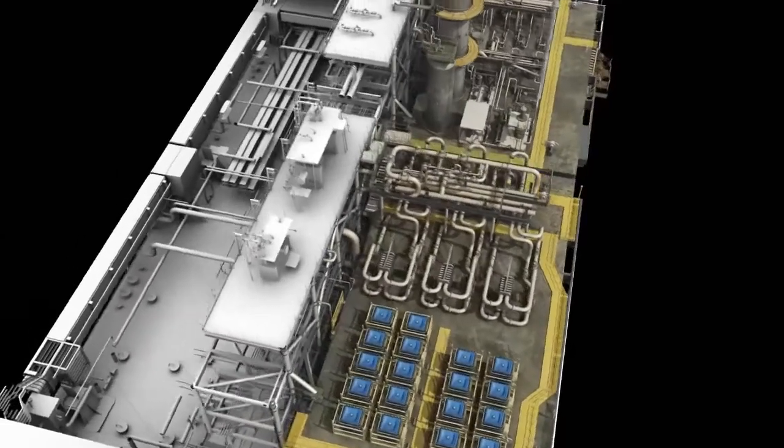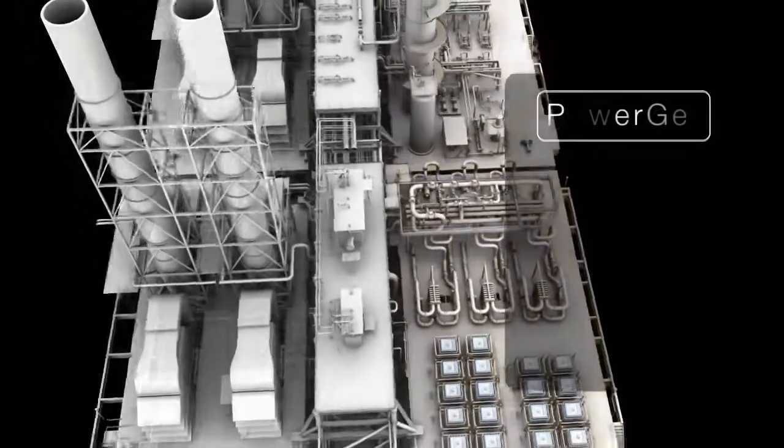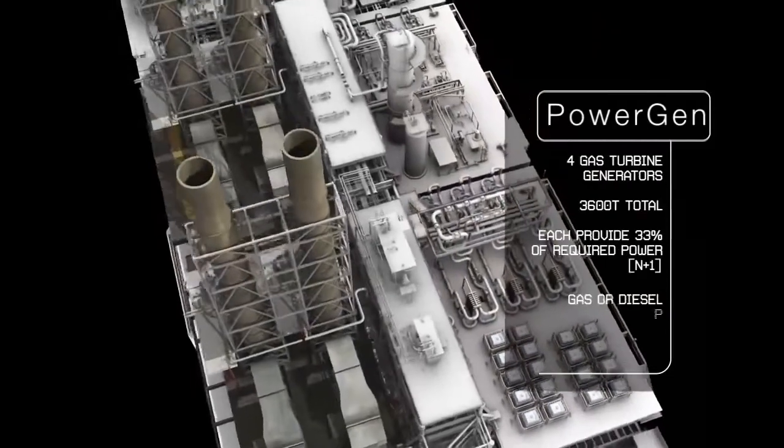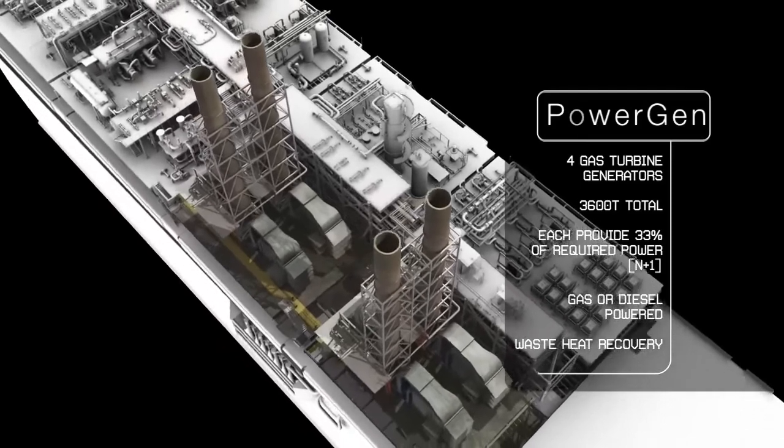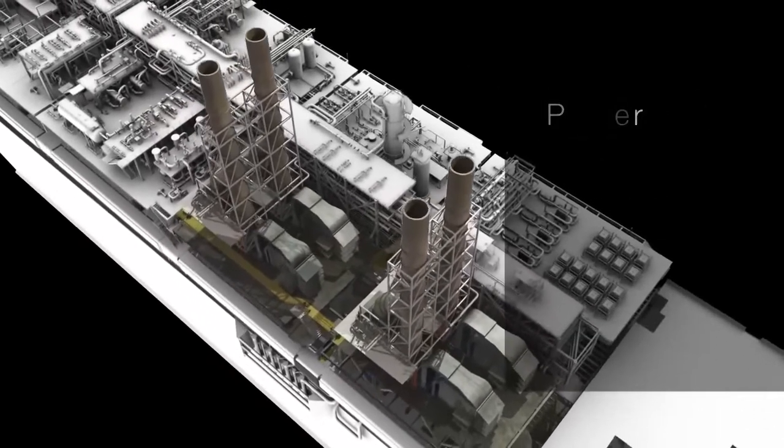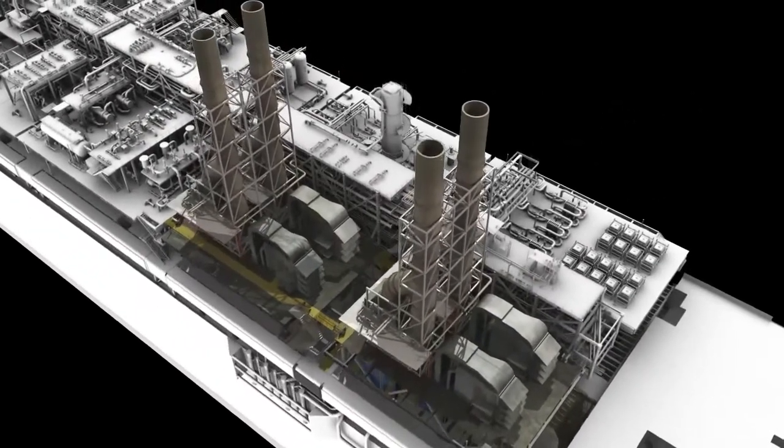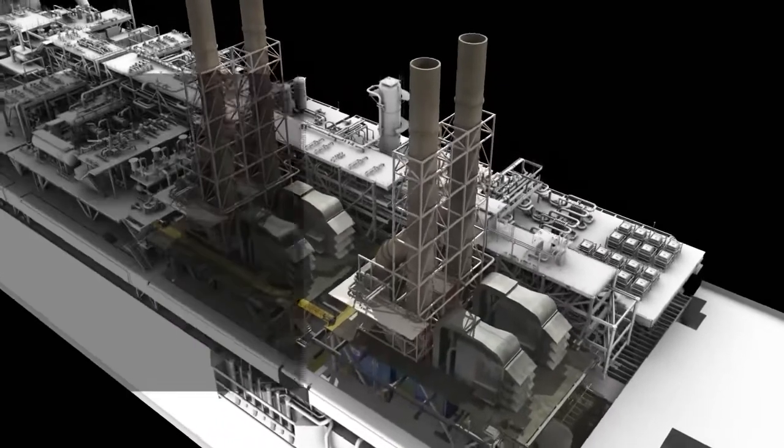Over on the port side is the PowerGen module. Four gas turbine generators will each be capable of supplying a third of the vessel's required 90 megawatts of power. Waste heat recovery units will be fitted to each of the turbine's exhausts to provide heat for the processing stages.